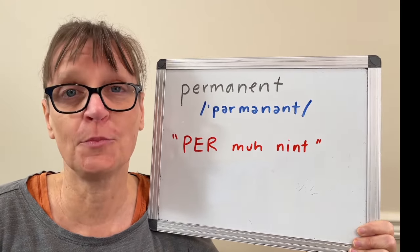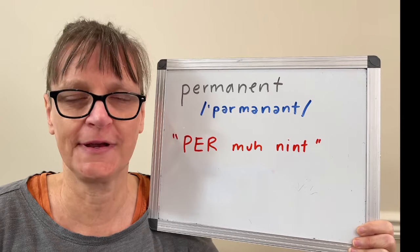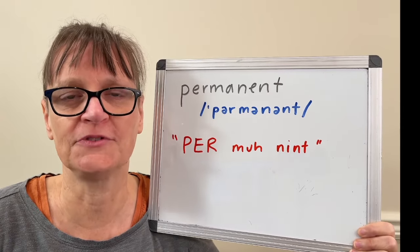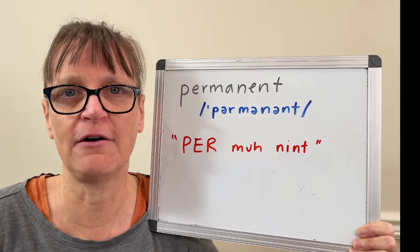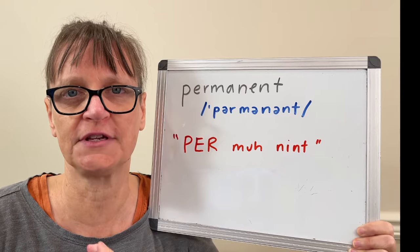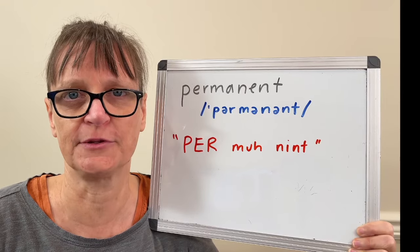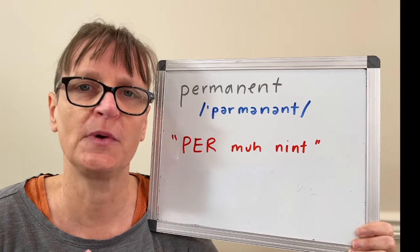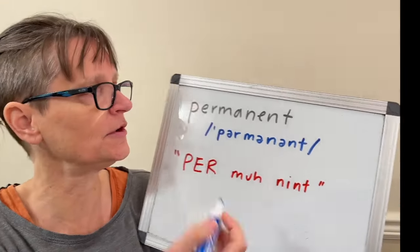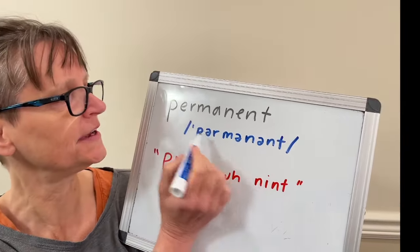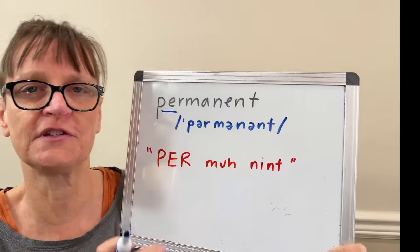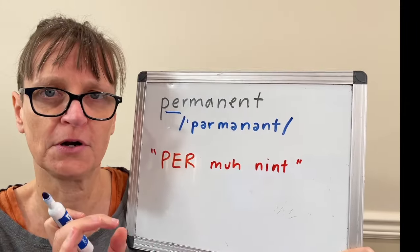Permanent is a great example of how we use clear vowels in the stressed syllable and reduced vowels in the unstressed syllables. In the word 'permanent' we have the stress on the first syllable: 'per.'